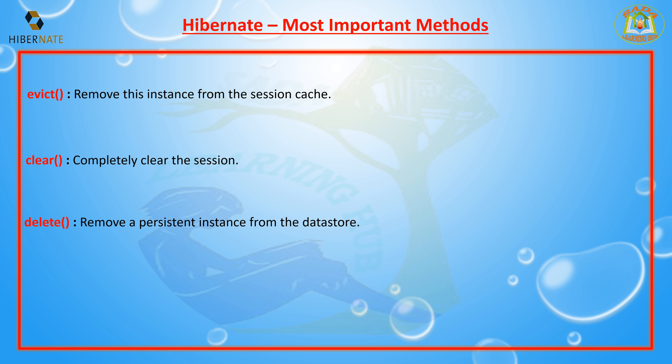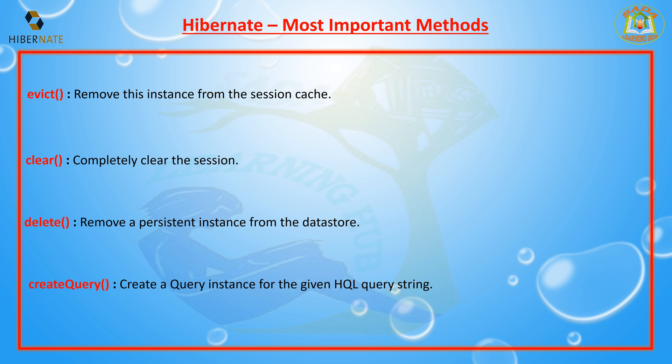The delete method removes the persistent instance from the data store. Whenever you call the delete method it deletes the record from the database.